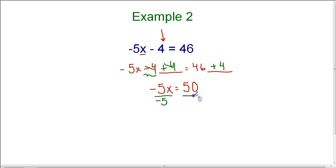And whatever I do to one side, I must do to the other side. So I'm going to divide by negative 5 on both sides of the equation. Negative 5 divided by negative 5 is 1, and 1 times x is just x. On the right hand side, 50 divided by negative 5 is negative 10.